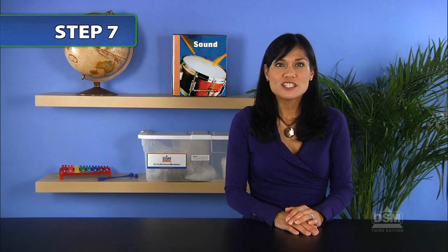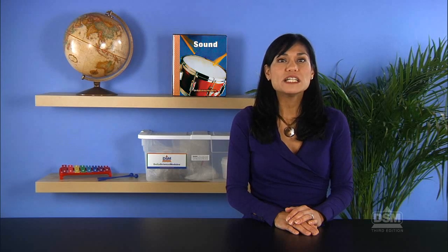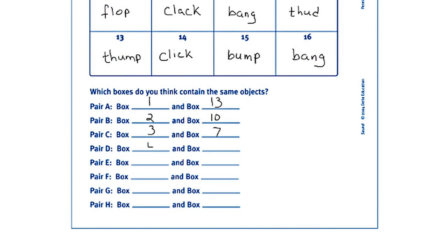Next, challenge the teams to identify the pairs of boxes that contain identical objects by examining the information they have recorded. Instruct them to write the numbers of those pairs of boxes on the lines at the bottom of the Activity Sheet.